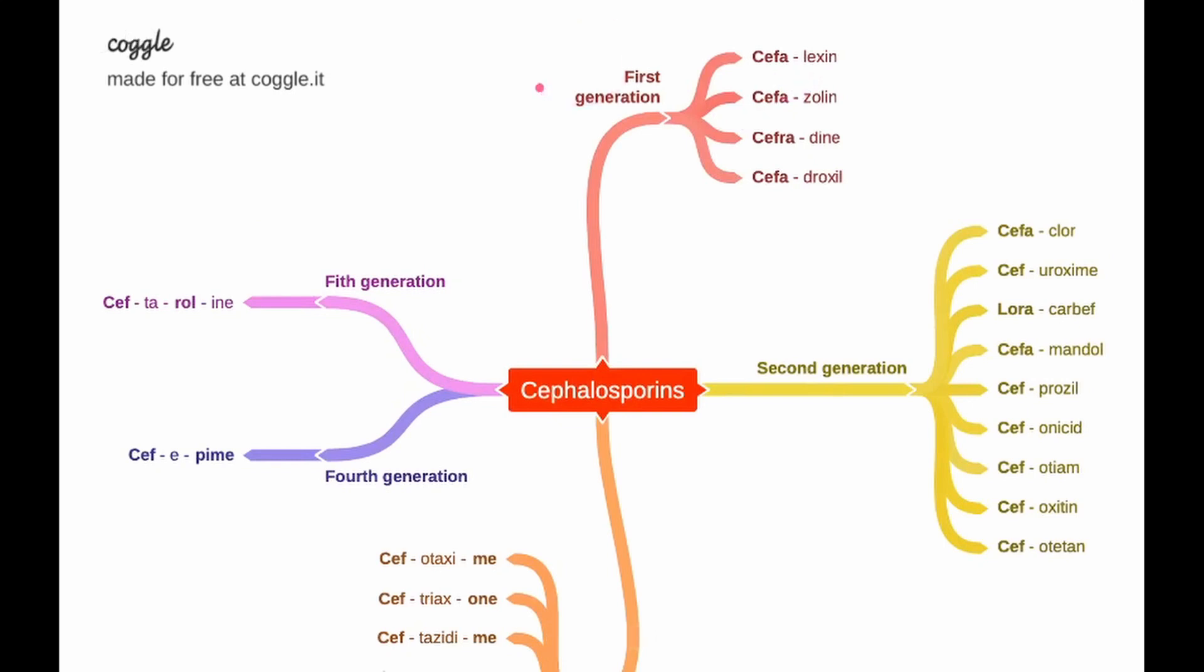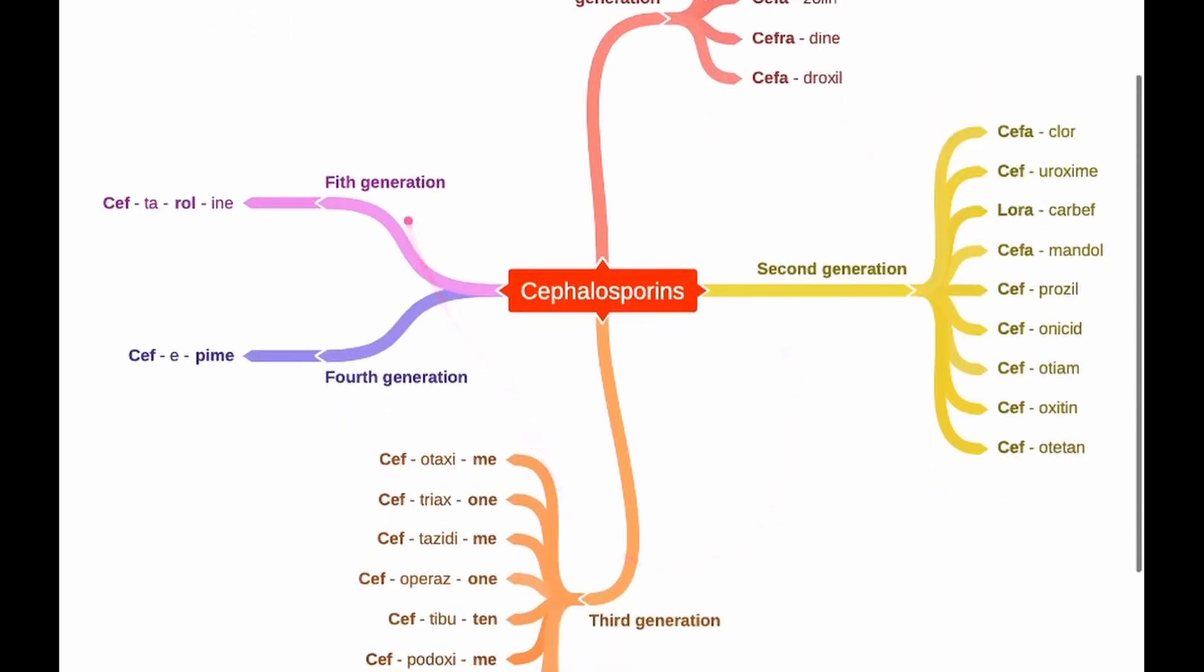The first generations are more active against gram-positive bacteria. And the more you go forward into the generation, the more of an effect they have on gram-negative bacteria.